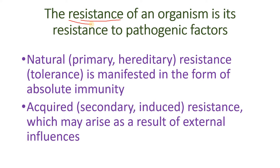Relative immunity, for example, is a person's resistance to common plague, which may be overcome with contact from a source of infection against the background of overwork and associated weakening of immunological reactivity. Acquired resistance, which is secondary, can arise as a result of previous infection, after administration of vaccines and sera, or through antigen overload in response to introduction of a large amount of protein antigen.